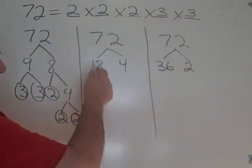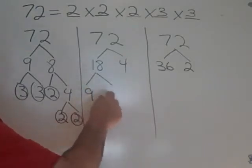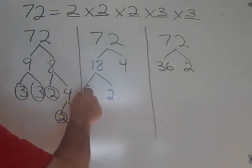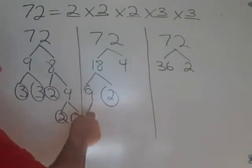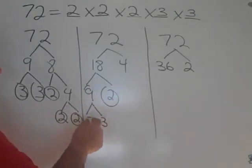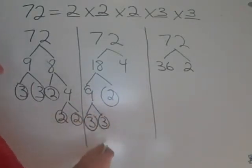So, the next table. 18, or that's 9 times 2. 2 is prime. 9 is not. 9 is 3 times 3. And the 3's are prime.